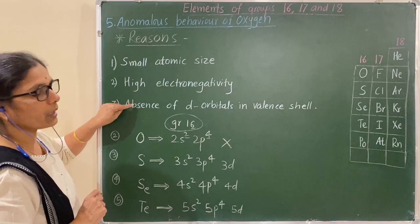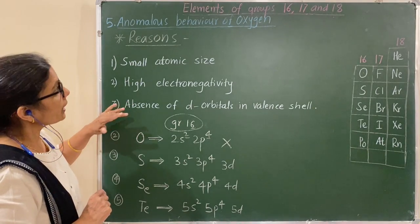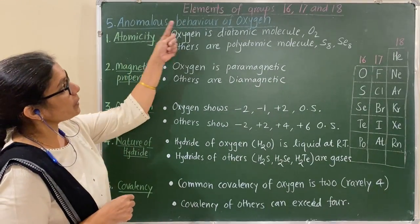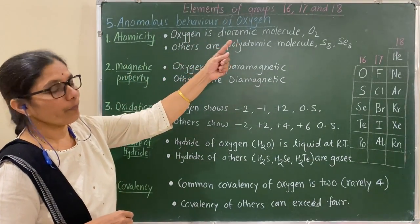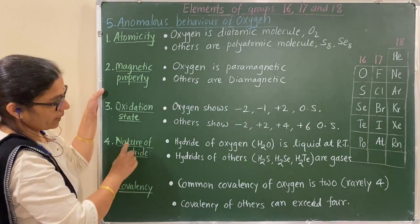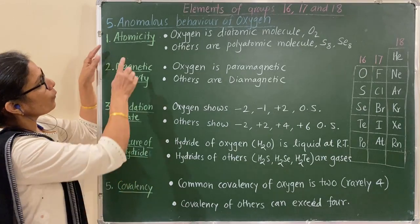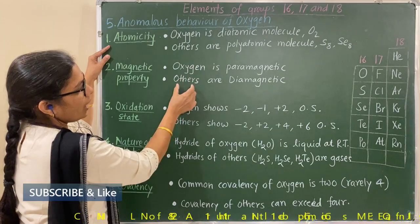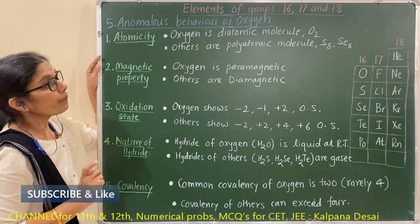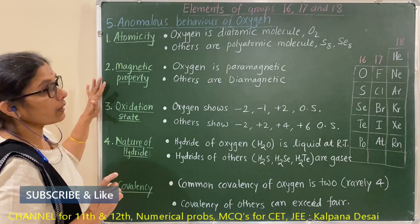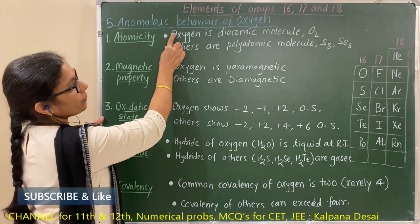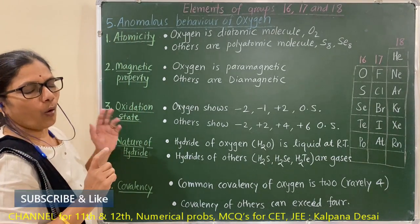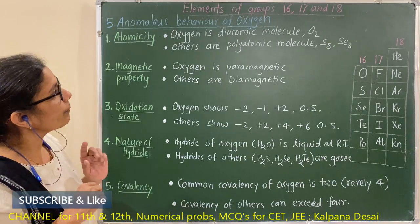So those are the three reasons for oxygen's anomalous behavior. Now let us look at the anomalous properties of oxygen. Remember these points — for each point, compare oxygen with other members. Each point may carry half a mark, so one point is one mark, though the marking scheme may differ.